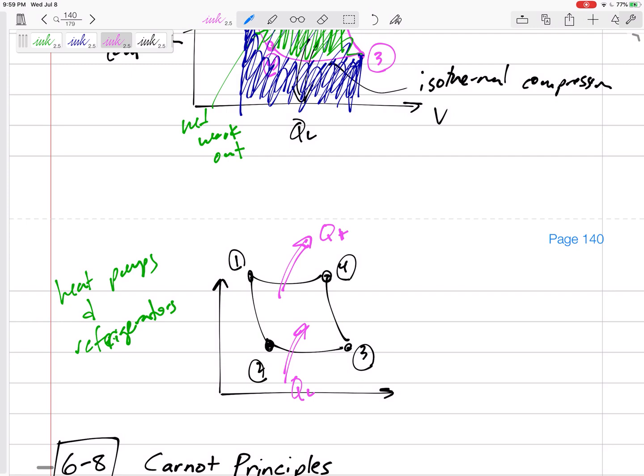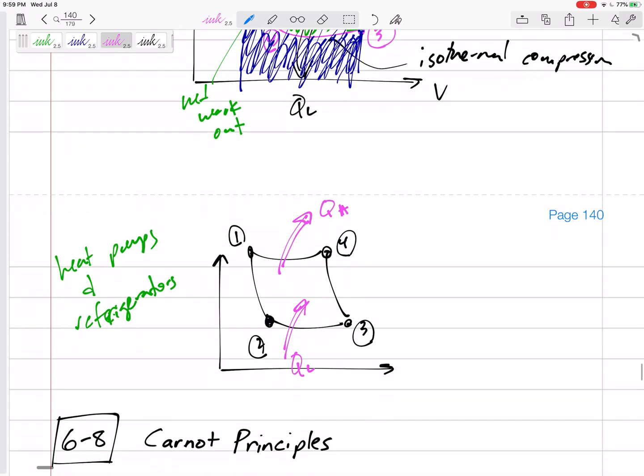And we are putting in QL through here. We're putting out QH right here. And this, because we went backwards, this would be a negative work, or this would be a work that we have to put in.